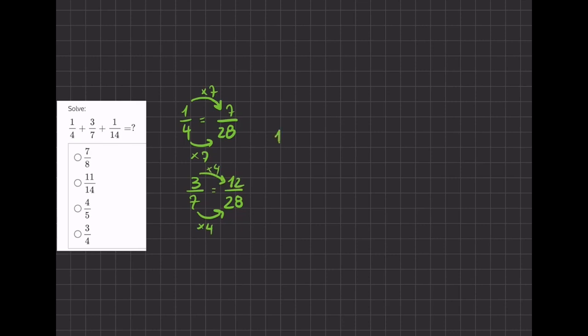Now our last fraction, 1/14, we want to turn into a common denominator of 28, so we multiply by 2. We multiply the denominator by 2, we multiply the numerator by 2, and that gives us 2/28.